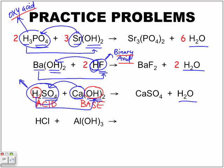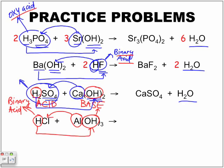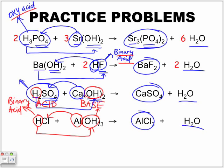Our last example: hydrochloric acid and aluminum hydroxide. It's a binary acid. Hydroxide is our base. We know hydrogen is going to combine with the hydroxide to form our water, and this metal combines with this non-metal to form our ionic compound — our salt. Again, water is formed here, and a salt, because it's a metal and non-metal pairing. The last thing left is to balance that equation.